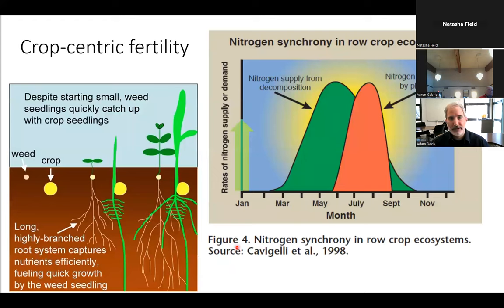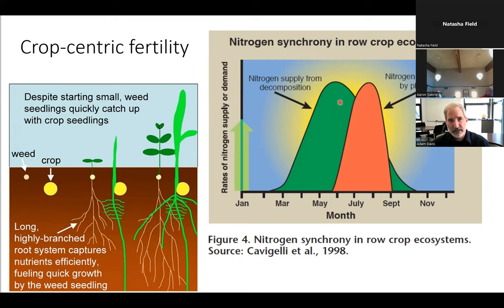Another feature of those longer rotations was the use of composted dairy manure. Many weeds are optimized as nutrient hogs and really like high-fertility environments. With a heavier emphasis on organic sources of nitrogen, we had better synchrony between nitrogen availability from organic sources and nitrogen demand by the corn plants. When you apply all your nitrogen in synthetic form, it's there for the weeds to lap up quickly, so we believe organic nitrogen synchrony was another form of weed suppression.